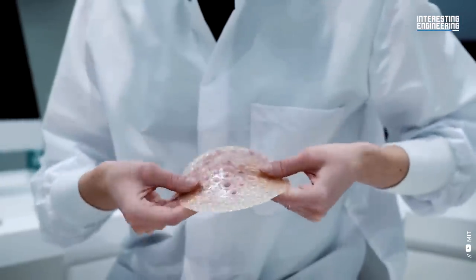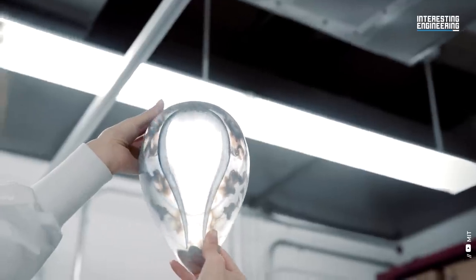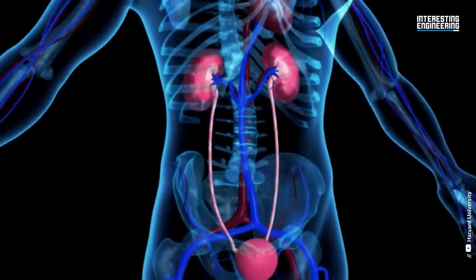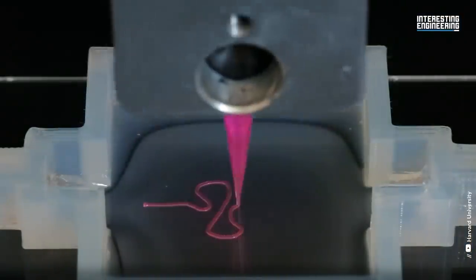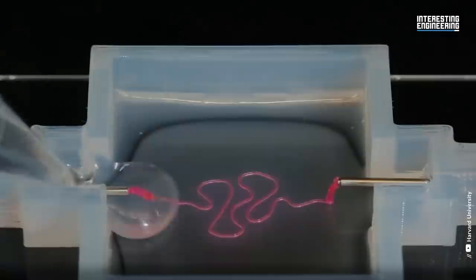Printing human cells could lead to printing cells into a structure that can be inserted into the body. Imagine we could print new organs and other parts of the body or have them repair parts within the body.